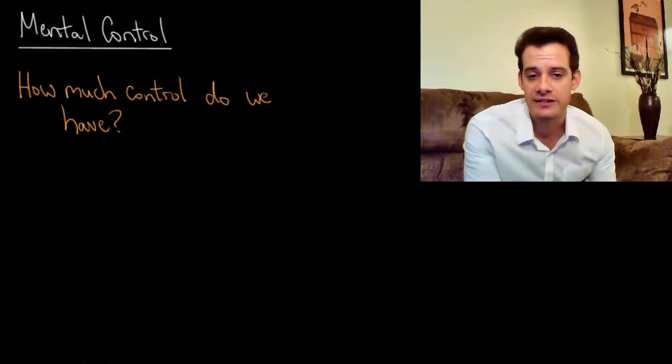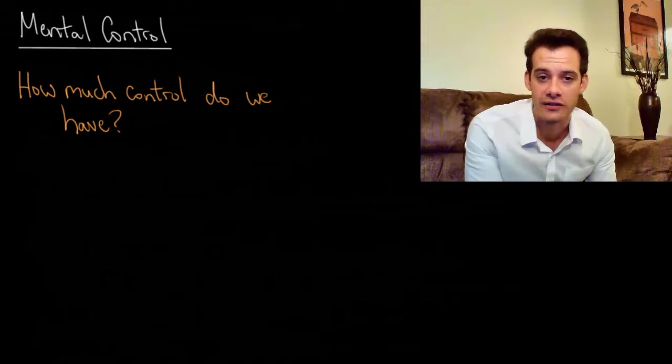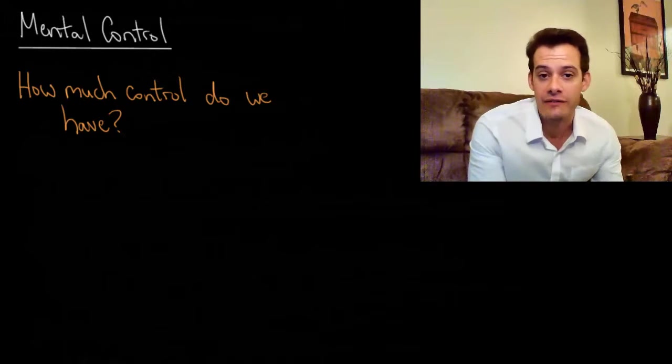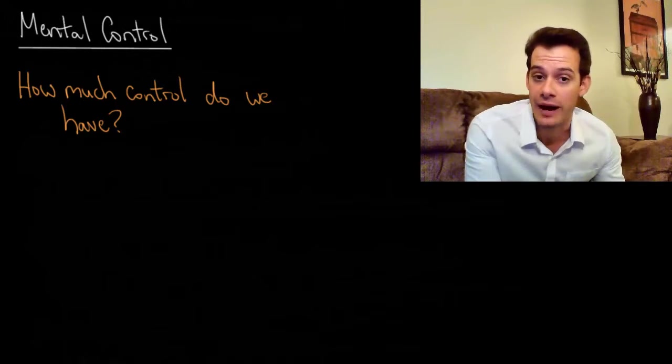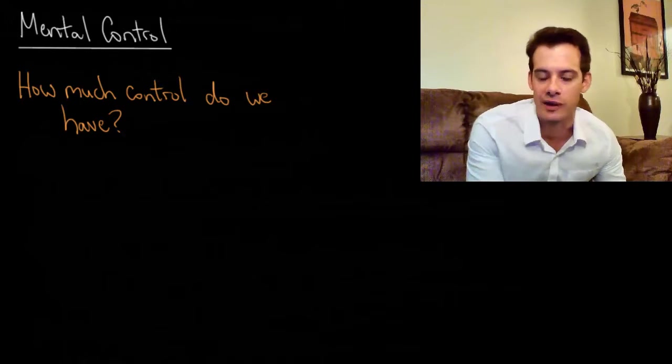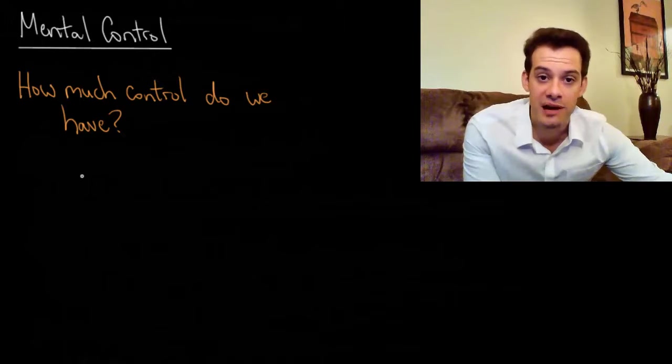What Wegner did is he asked people to try to suppress their thoughts. So if you went into this lab, you might be asked for the next few minutes you can think about whatever you want. And if you happen to think of a white bear, press this counter here and you'll keep track of how many times you think of white bears. But other people are given this thought suppression challenge. So they're told don't think of white bears. Think of whatever you want, but avoid thinking about white bears. And if you think of one, press this button and we'll keep track.